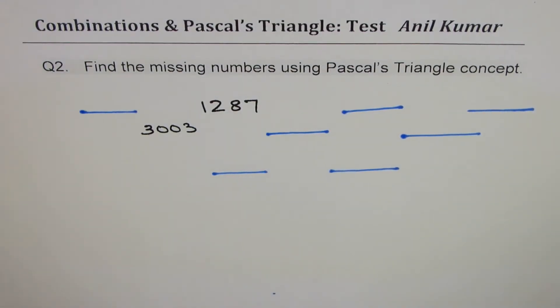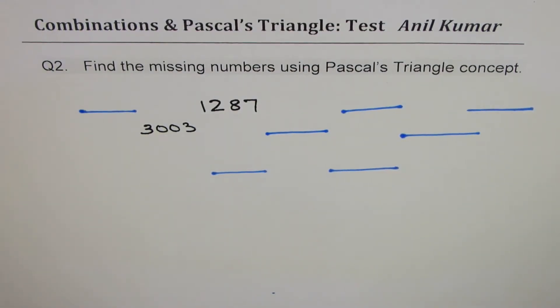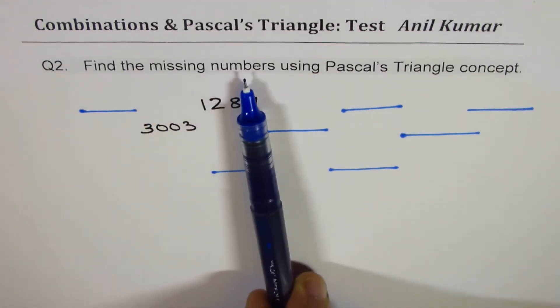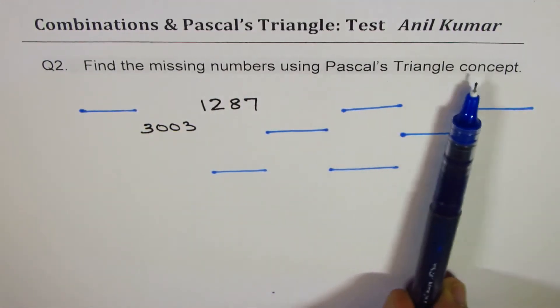I'm Anil Kumar. Here is a thinking question on finding the missing terms using Pascal's triangle concept. The question here is find the missing numbers using Pascal's triangle concepts.